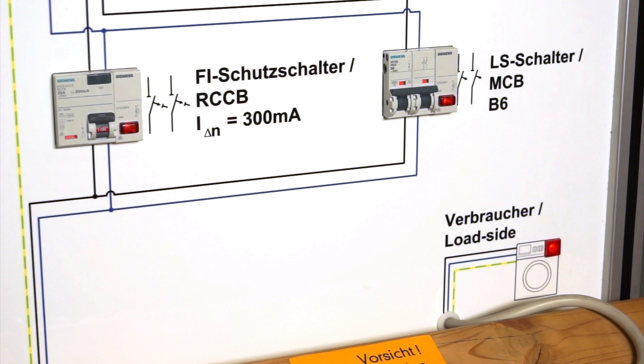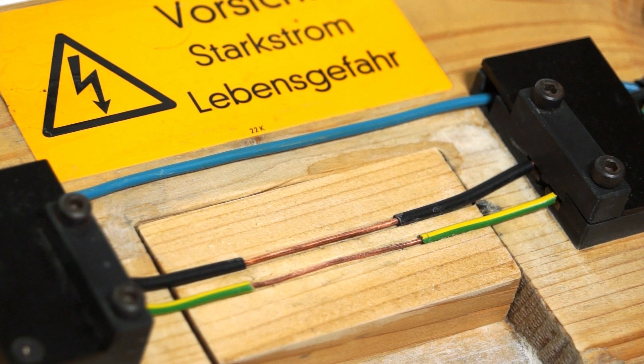This simulation shows how RCCBs can be used to provide fire protection. For this, the rated residual current must not exceed 300 milliampere. Our example shows an insulation fault between two cables.